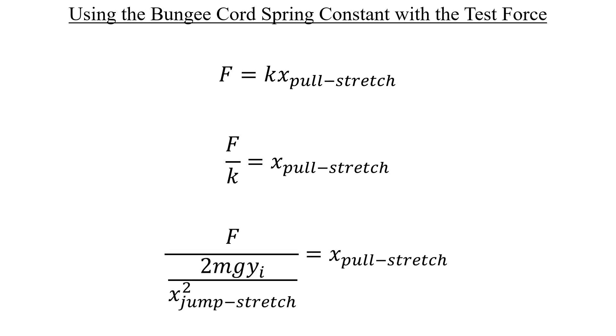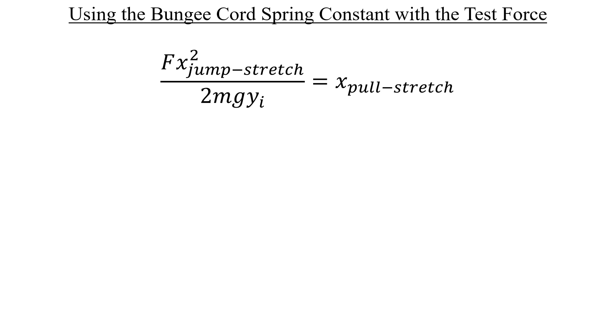We'll get F divided by a fraction, but that's okay. When you divide by a fraction, it's the same as multiplying by the inverse of that ratio, which means we'll end up sticking the square of the jump stretch distance into the numerator alongside F.